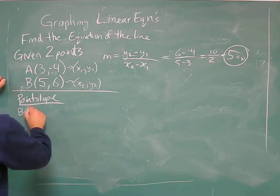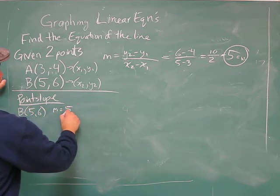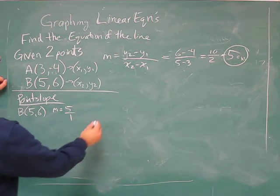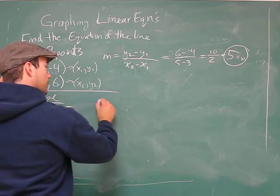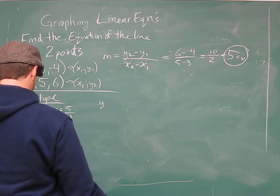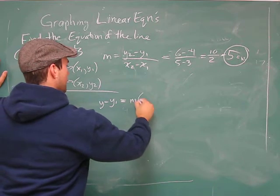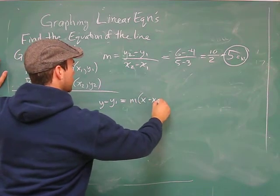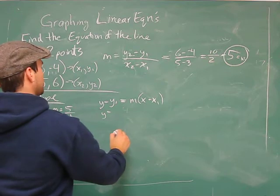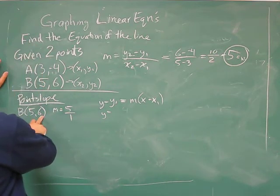Our point and our slope, and 5 is the same as 5 over 1. Okay. So here's our point slope formula. It's y minus y1 equals m times x minus x1.